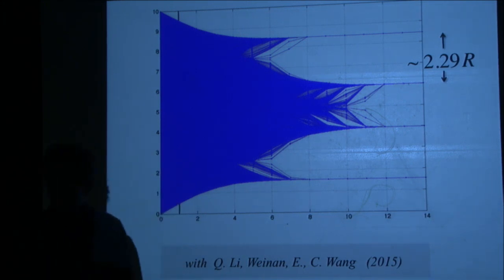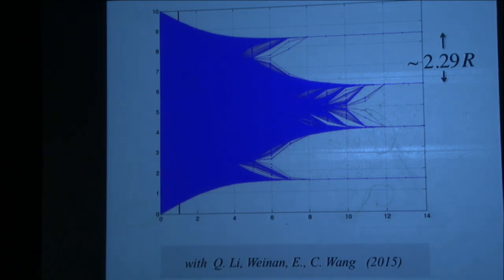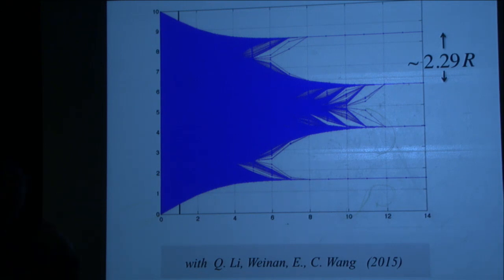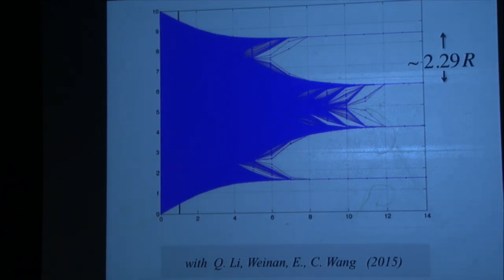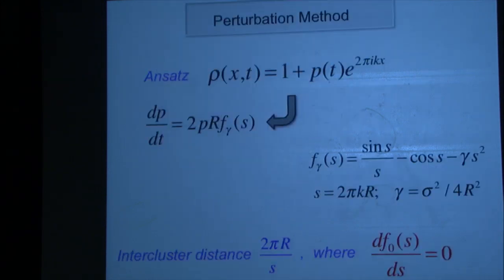And there we could show mathematically that the cluster spacing is 2.29r — very close to 2.3, which is what the simulation shows. So that solves the problem in the thermodynamic limit. We still don't have a clue how to do it in the discrete case.